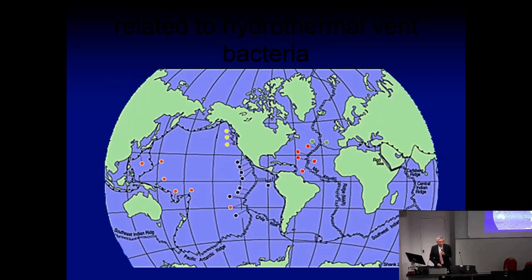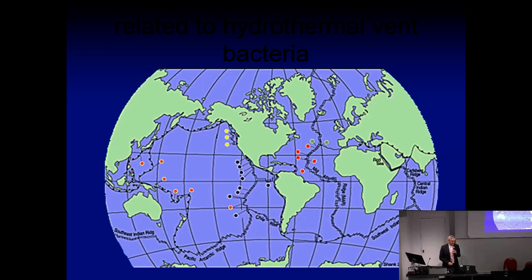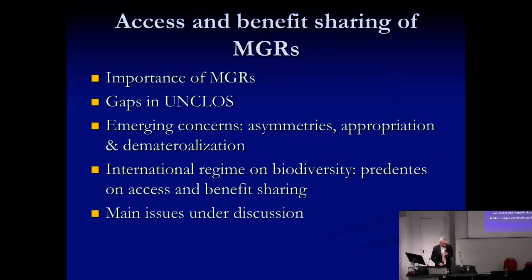As everybody knows, oceans are very important. Most of the planet is covered by oceans, and they are important for many reasons — transportation, food security, sports, tourism. The oceans are also a very rich source of biodiversity, and this is sometimes ignored with insufficient effort to conserve and protect such biodiversity. The aim of this resolution is to look at means to protect biodiversity not subject to national sovereign rights, and also to look at how to get access to that biodiversity and share the benefits.